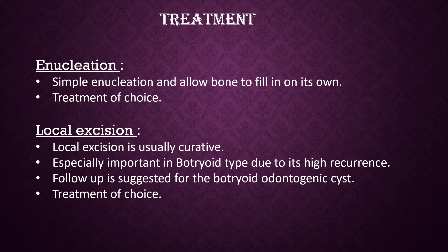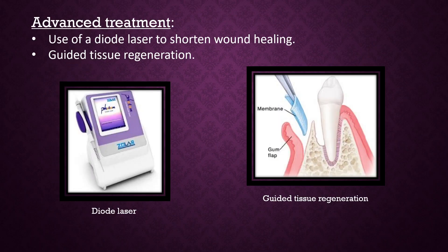Treatment: Simple enucleation, allowing bone to fill in on its own, is the treatment of choice. Local excision is usually curative and is especially important in the botryoid type due to its high recurrence rate; follow-up is suggested for the botryoid odontogenic cyst. Advanced treatment includes the use of a diode laser to shorten wound healing, and guided tissue regeneration.